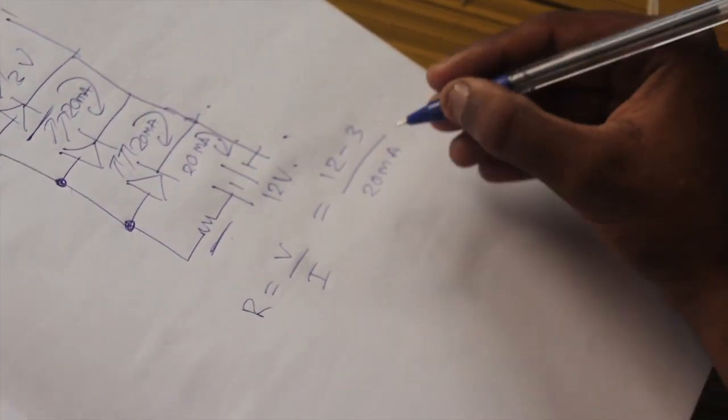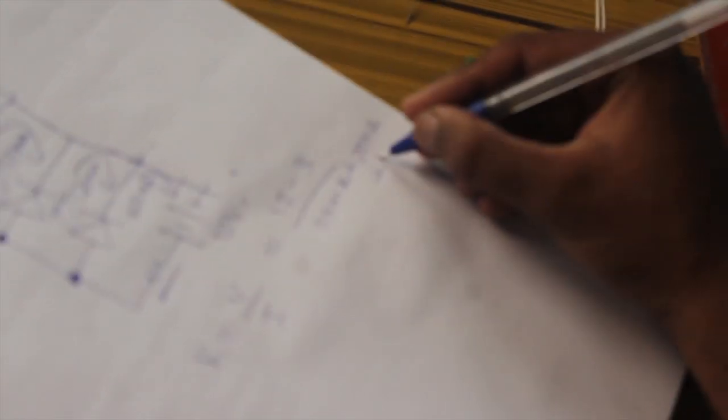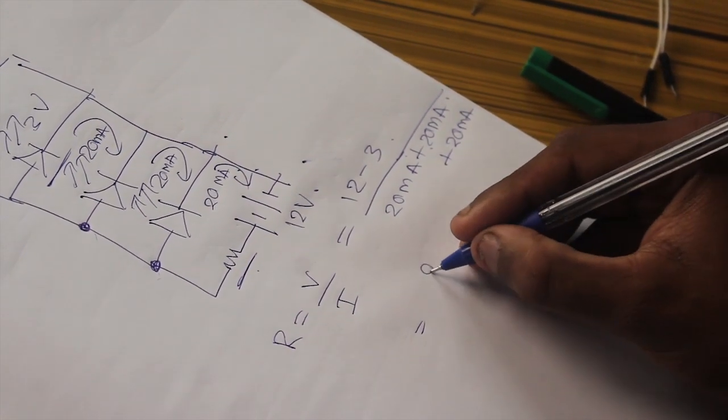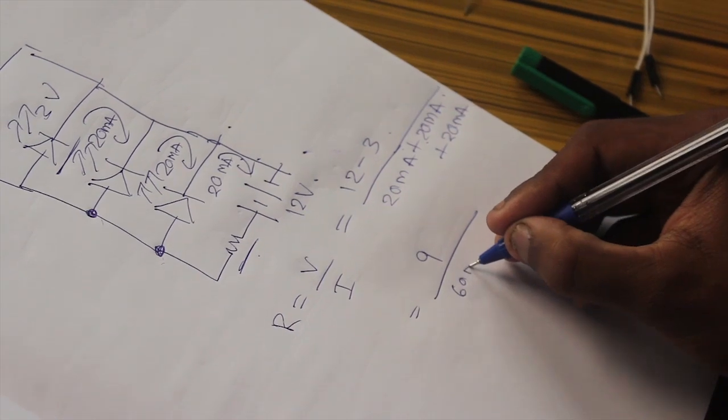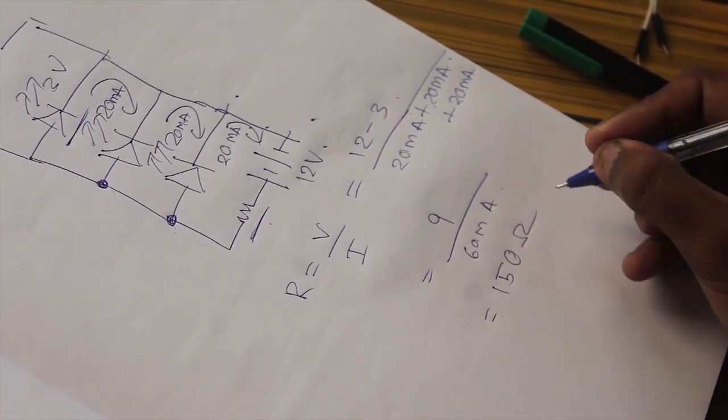Sorry, actually 20 plus 20 plus 20, because in a parallel circuit, the currents add up. So the current gets divided in each branch. Therefore, 9V divided by 60 milliamps gives us around 150 Ohm of resistance.